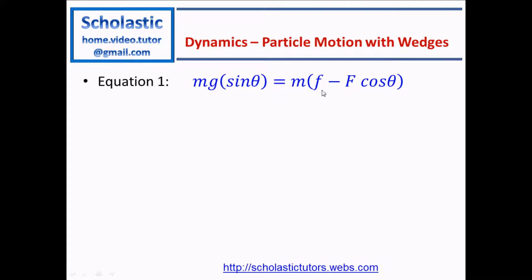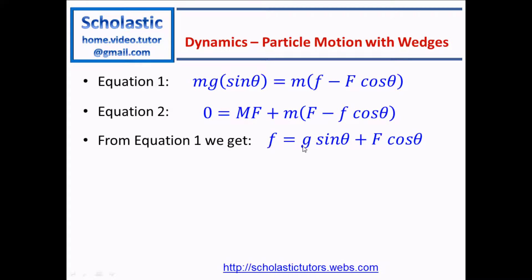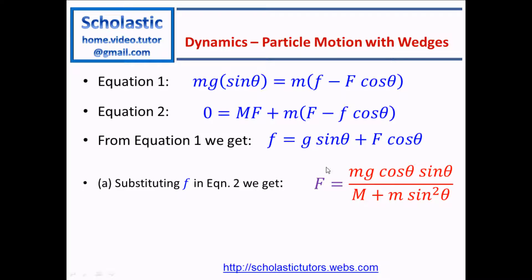We now have two equations. Equation one: Mg sin theta equals M(simple F minus capital F cos theta). Equation two: 0 equals capital M times capital F plus simple M times (capital F minus simple F cos theta). From equation one, simple F equals g sin theta plus capital F cos theta. Substituting into equation two and simplifying gives capital F equals Mg cos theta sin theta divided by (capital M plus simple M sin squared theta).